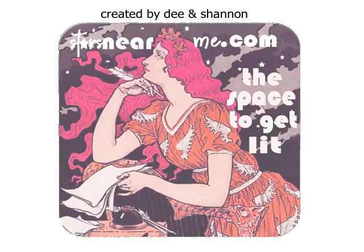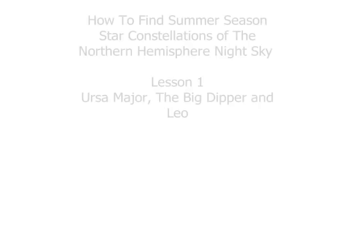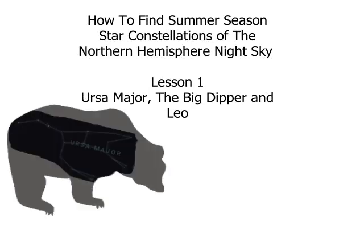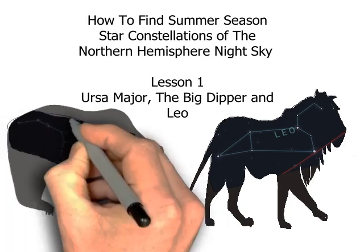Welcome back, everyone. I'm Shannon from StarsNearMe.com, and I'll be your adventure guide here on your way to becoming starsighted. It's time to get lit. Our first lesson to learn the summer season star constellations of the night sky in the northern hemisphere will help you learn when and where to find the first two constellations we're going to focus on here: Ursa Major or the Great Bear and Leo the Lion. We're also going to take a look at probably the most well-known and easiest star grouping to identify in the northern hemisphere, called the Big Dipper.